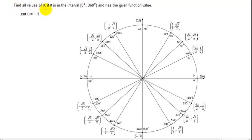In this problem I need to find all values of theta if theta is in the interval 0 to 360 degrees for which the cotangent of theta is negative 1.